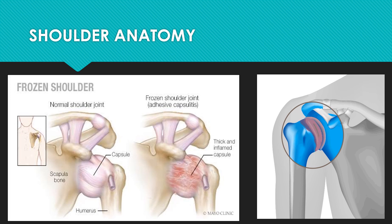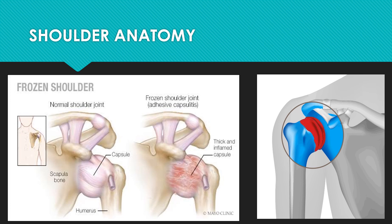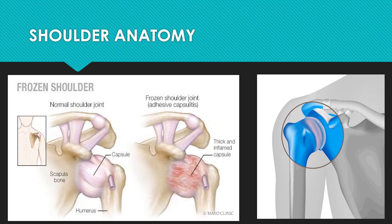The shoulder joint is made up of the glenoid fossa and the head of humerus. This joint is enclosed in a connective tissue called the capsule. In frozen shoulder, this capsule is inflamed, thickened, and tends to become tight. As seen in this demonstration, the red part is the inflamed capsule. This inflamed, tightened, and thickened capsule makes movement difficult and painful — this is the normal shoulder joint, and this is the thick, inflamed shoulder joint.